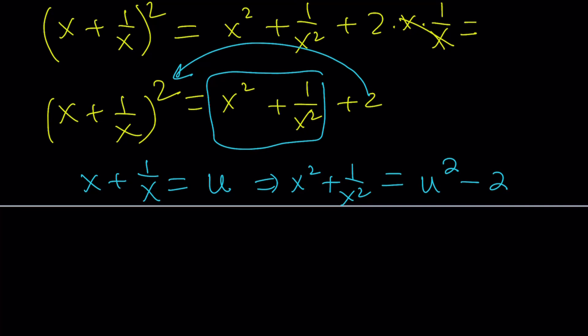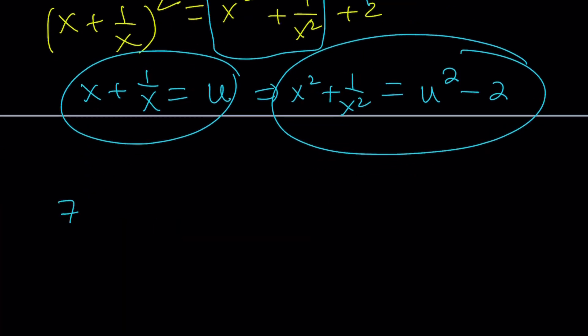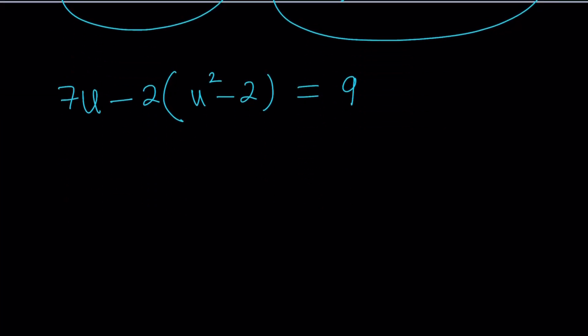Let's go ahead and substitute both of these into our equation. We have 7 times u minus 2 times u squared minus 2 equals 9. And this is awesome because it's quadratic. Beautiful. So we can simplify this. 7u minus 2u squared plus 4 equals 9. Let's put u squared on the positive side: 2u squared minus 7u plus 5 equals 0.